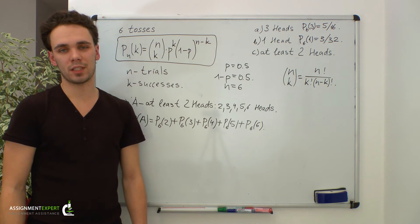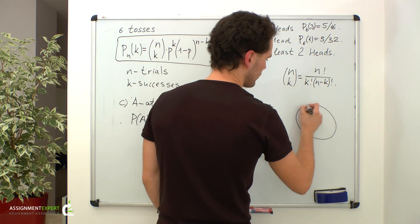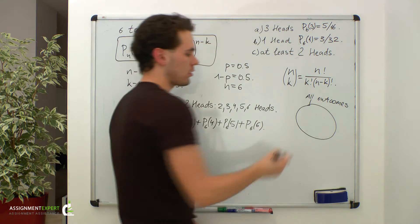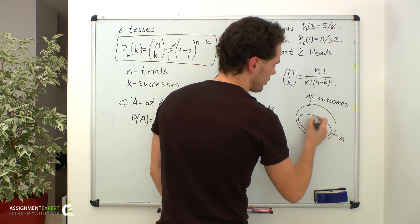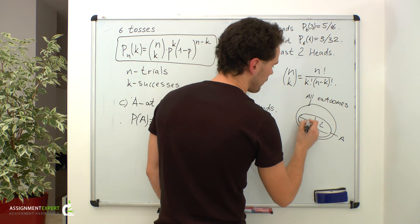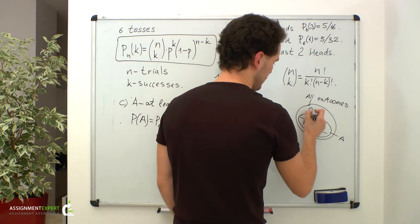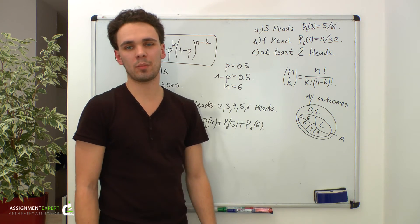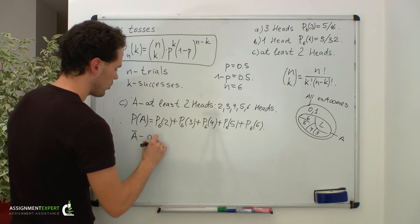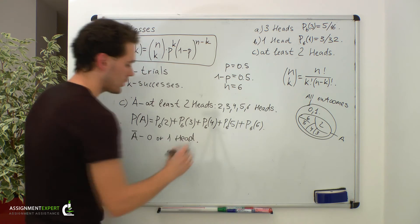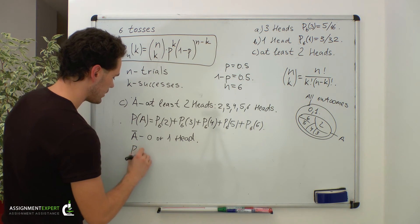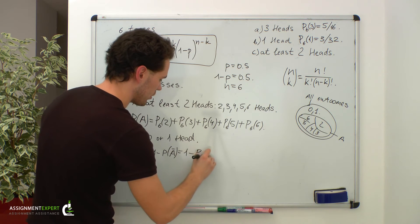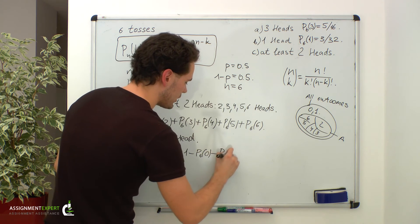Let's imagine all possible outcomes of six tosses as a circle. Event A occurs for outcomes of getting two, three, four, five, or six heads. The remaining outcomes are getting zero or one head. This means if we get zero or one head, event A will not occur — therefore this is the complementary event to A. We know that the probability of event A equals one minus the probability of the complementary event, which is one minus the probability of zero successes out of six trials, minus the probability of one success out of six trials.